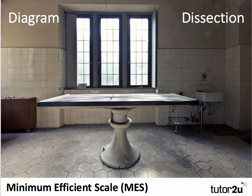Hi there. Here is another diagram dissection taking a key diagram in A2 economics and making sure we know the essentials. This one looks at minimum efficient scale, or MES for short. The minimum efficient scale is defined as the scale of production where internal economies of scale have been fully exploited. In other words, it corresponds to the lowest point on the long run average cost curve.